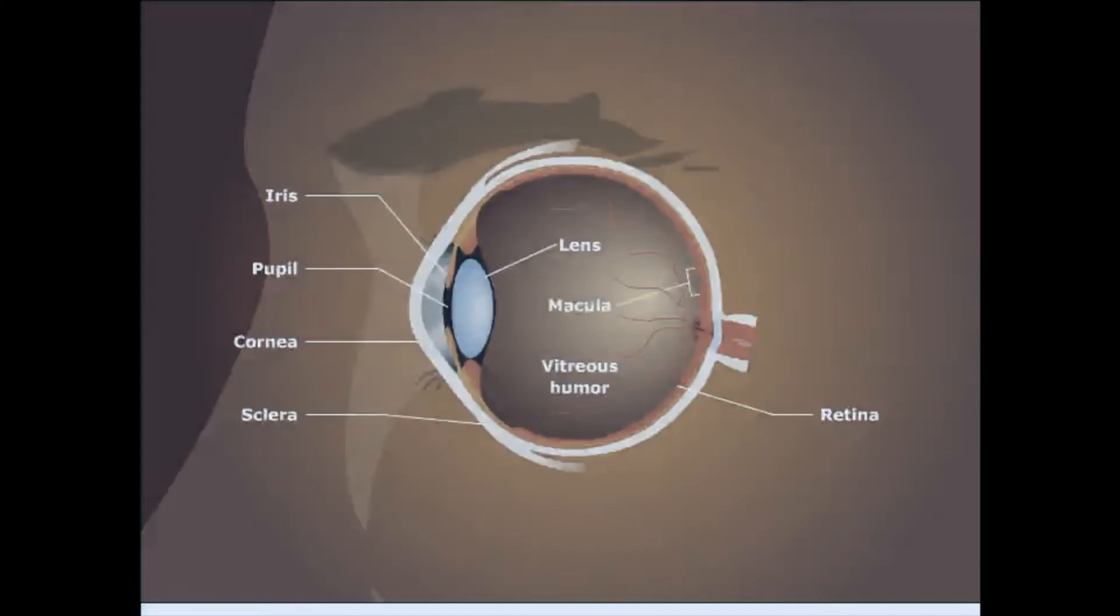The macula is the central portion of the retina that surrounds the fovea. It provides clear and distinct vision. The fovea is the central portion of the macula and the point of greatest visual acuity.